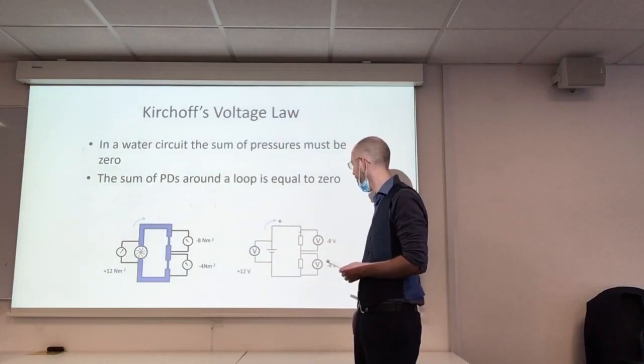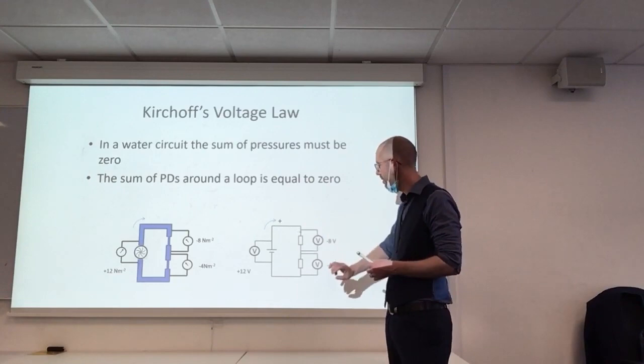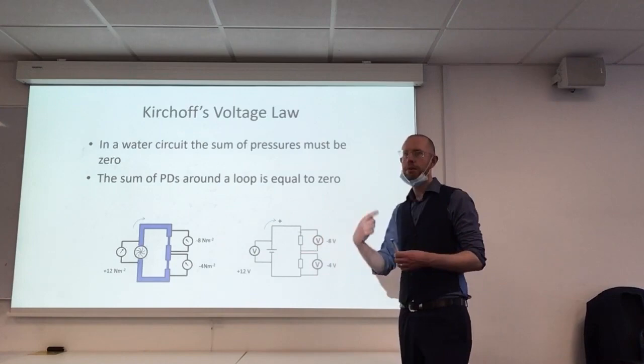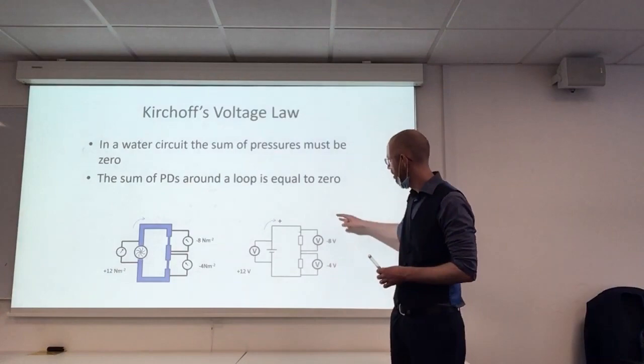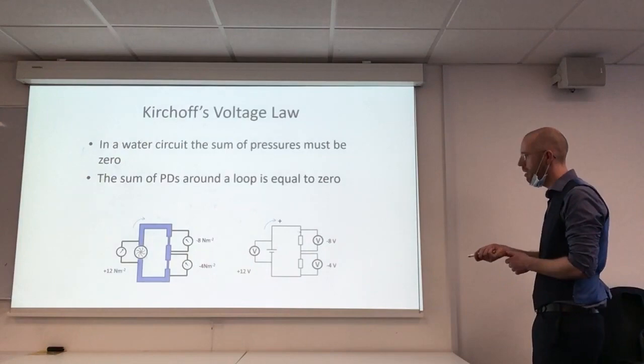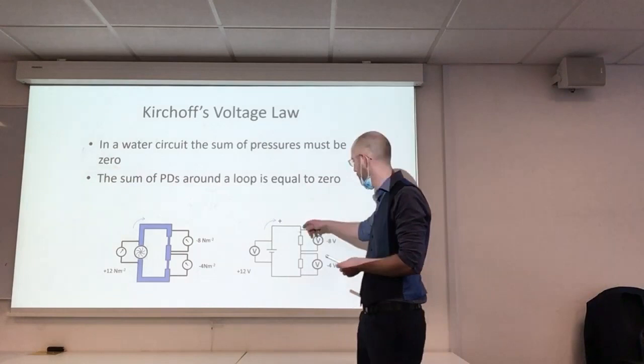And then again, you've got current flowing around the circuit and get to a resistor. If we measure the voltage over that resistor, we see some voltage drop. So the battery is adding voltage. If we go around the loop, then the resistor will cause a voltage drop. And similarly to the water circuit, the sum of these voltage drops must equal the voltage that is added by battery.